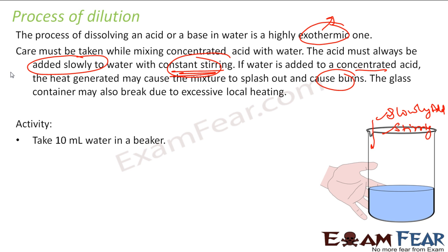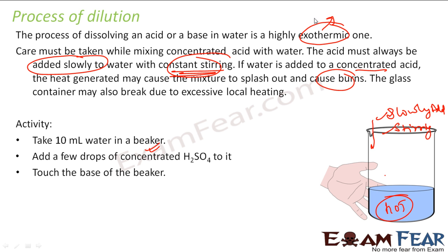We'll take some activity. We'll take some 10 ml of water in a beaker and we'll add a few drops of H2SO4. Very few concentrated H2SO4 to make it dilute. And then we'll touch the base of beaker. We'll see that it is hot. That means this is an exothermic reaction. We have explained in the last chapter that exothermic reaction is a reaction which gives heat. Also, the last chapter we have done the balancing equations and more of those, so if you have doubt you can watch the previous video.